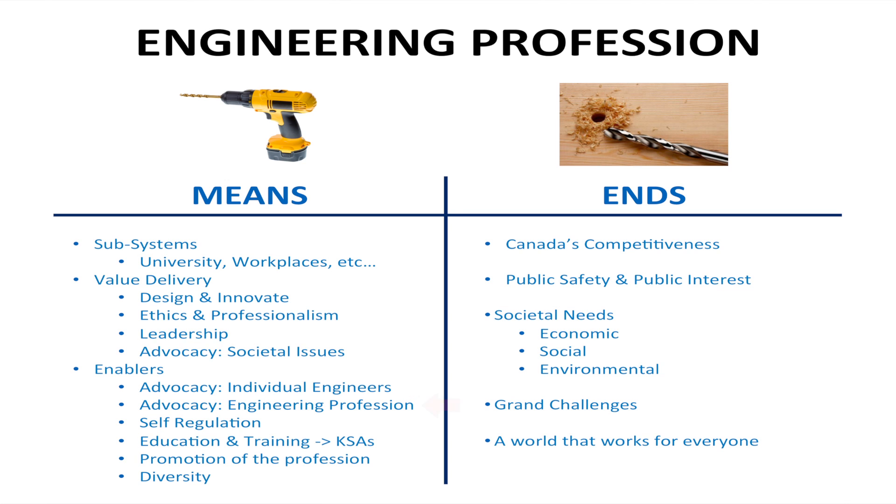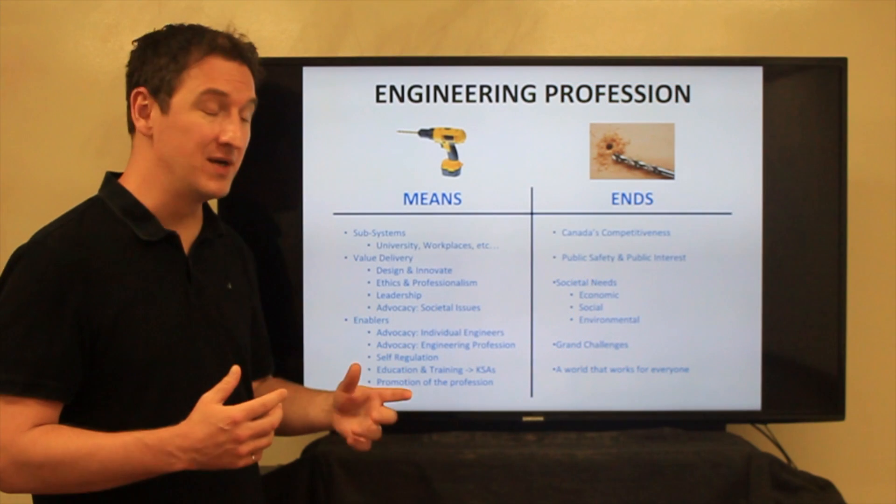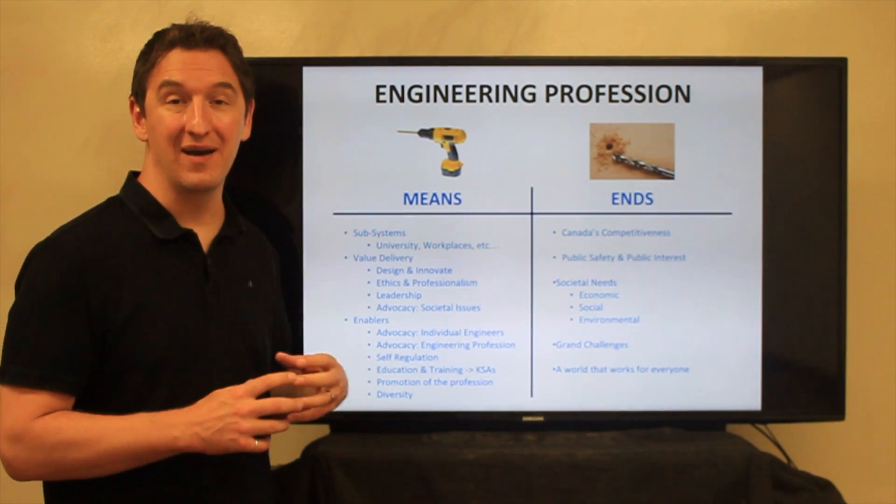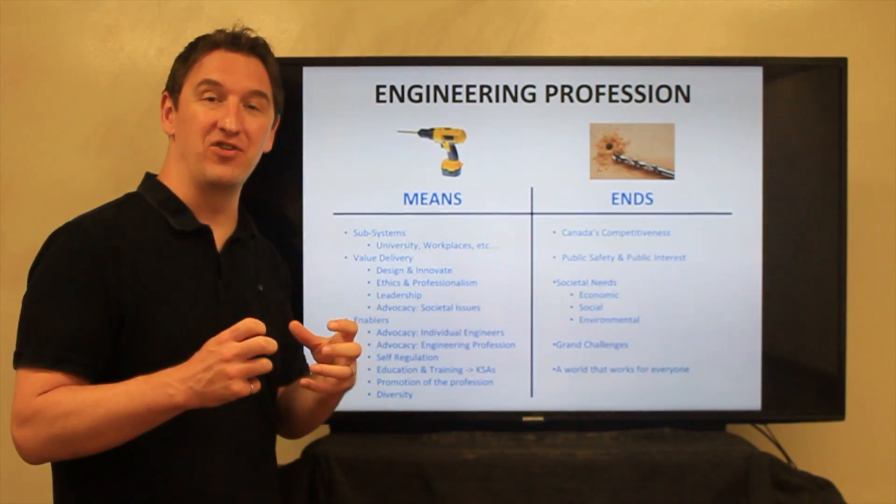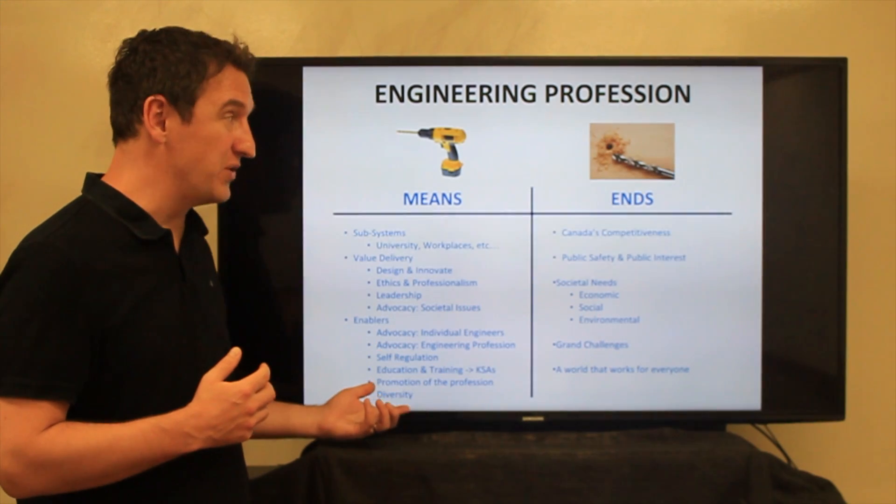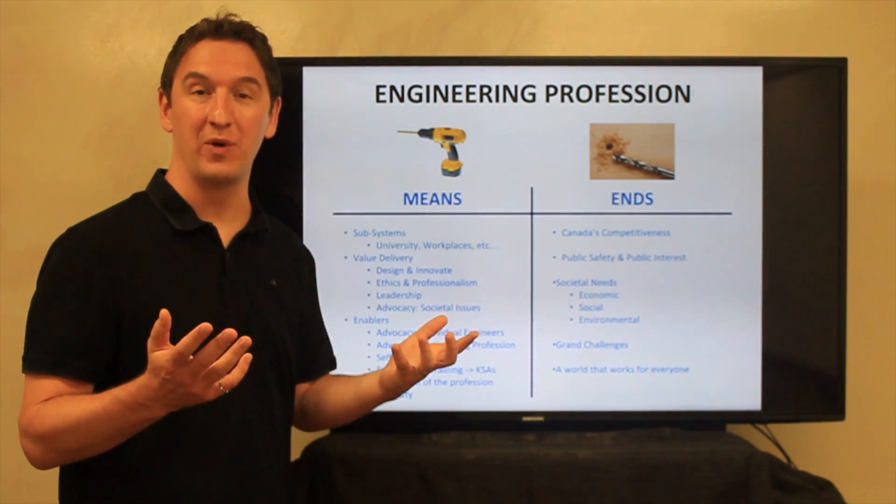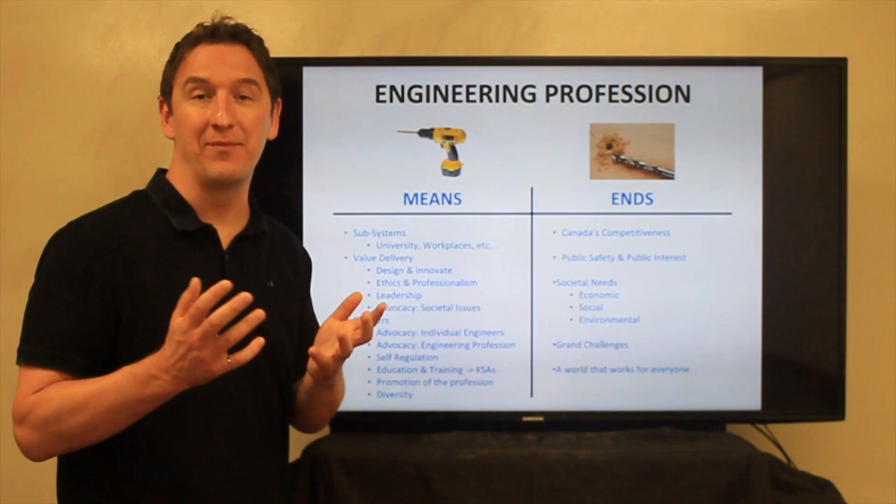So individual engineers in the profession need to be in a position to be able to add value over time. Self-regulation, the education and training that brings about certain knowledge, skills and attitudes, how we promote the profession to the general public, and even diversity within the profession. These are all examples of the means in which engineers and the engineering profession delivers value. Now diversity is an interesting one because it's a means in terms of the engineering profession itself delivering value, but you could also view it as an ends from a social justice point of view, which it absolutely is as well.